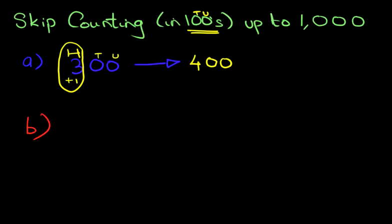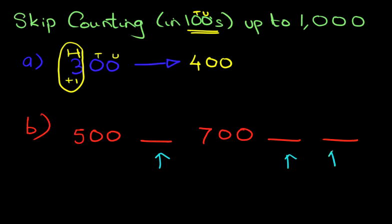We're going to work on one more example. Now, in this scenario, we've got two numbers, 500 and 700, and on either side we've got three blanks. We have to fill those in. We are counting in 100s. So what number comes after 500?